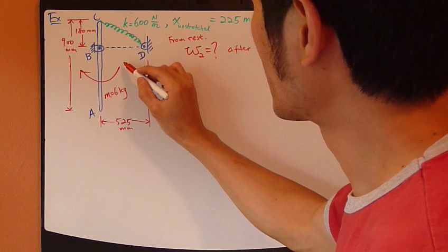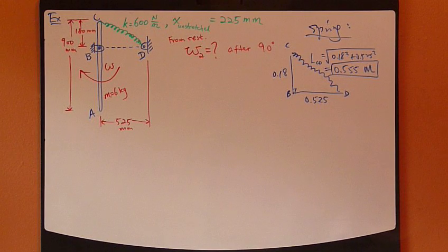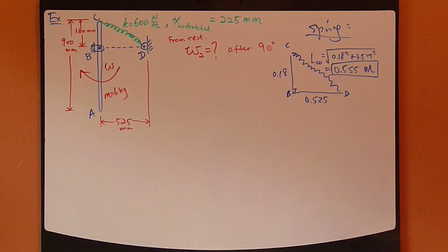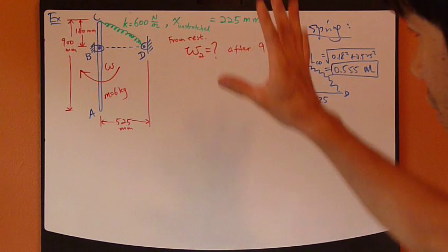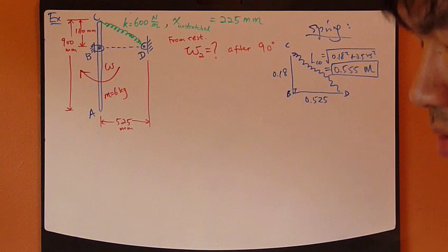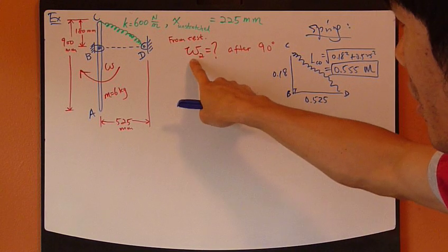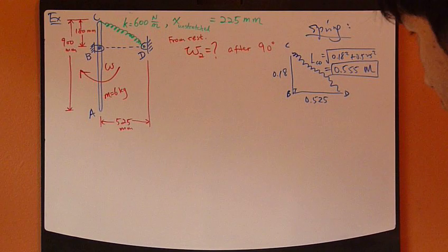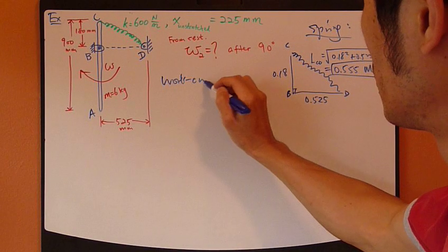The rod rotates clockwise — that's our omega direction. Since omega is the unknown we're solving for, this problem is most convenient using the work-energy method, because in that equation velocity is explicit. So let's apply it.